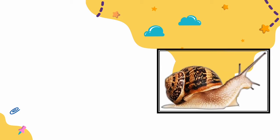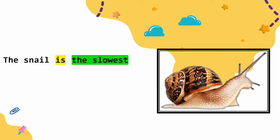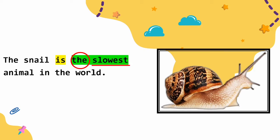Next, sekarang kita coba membuat kalimat menggunakan superlative adjective. This is a snail. So, subjectnya adalah the snail: The snail is the slowest animal in the world — siput adalah binatang yang paling lambat di dunia. Kalau kita mau menggunakan superlative adjective, kita harus menggunakan 'the' di depan superlative adjective — the slowest — dan jangan lupa tambahkan to be-nya, yaitu 'is'.